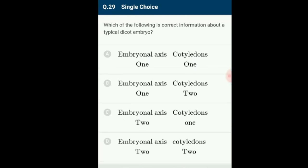Question 29: Which of the following is correct information about a typical dicot embryo? Dicot embryo possesses one embryonal axis and two cotyledons. Monocot embryo possesses one cotyledon. The correct option is option B: one embryonal axis and two cotyledons.